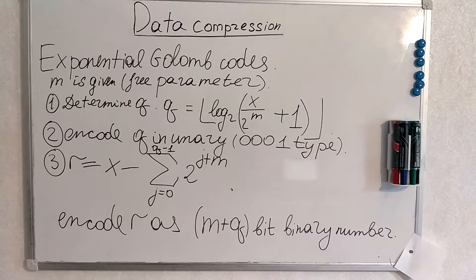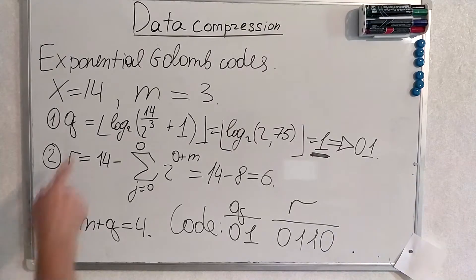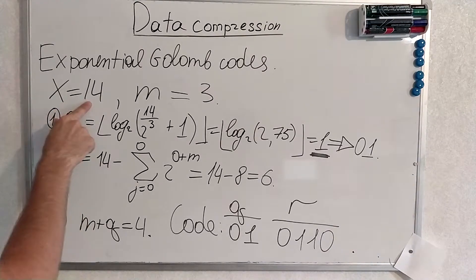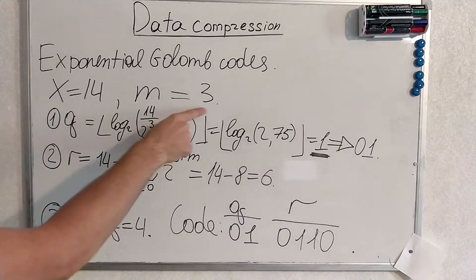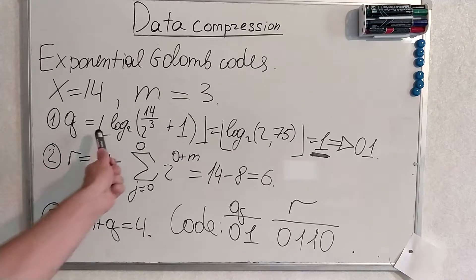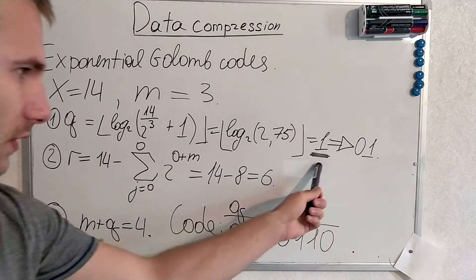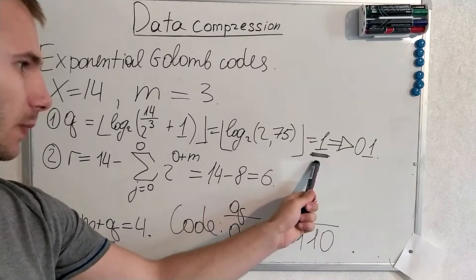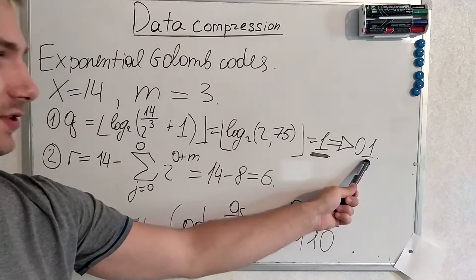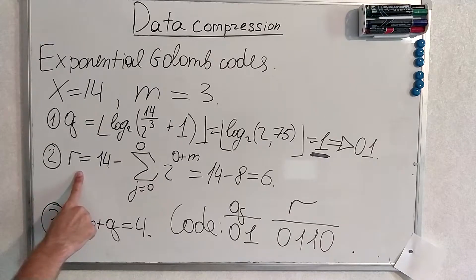I will give the example now. Here's the example: we are trying to encode 14 with M equals 3. We calculate Q by the formula and Q is found. It's the binary representation of Q. Then we calculate R.